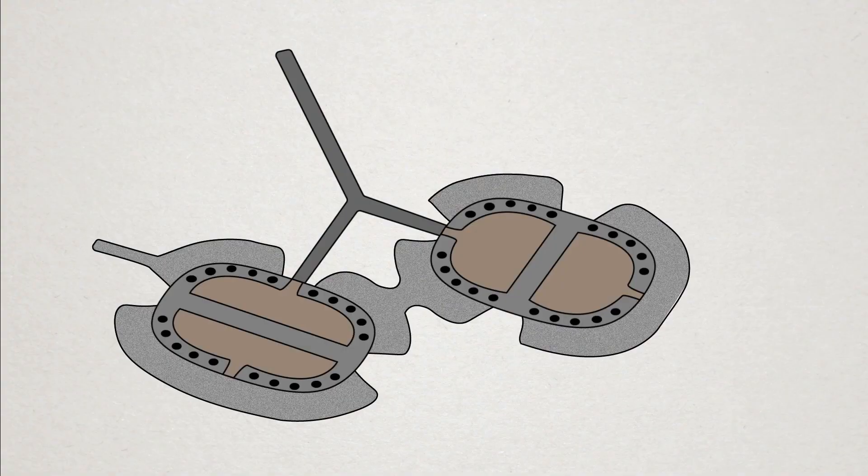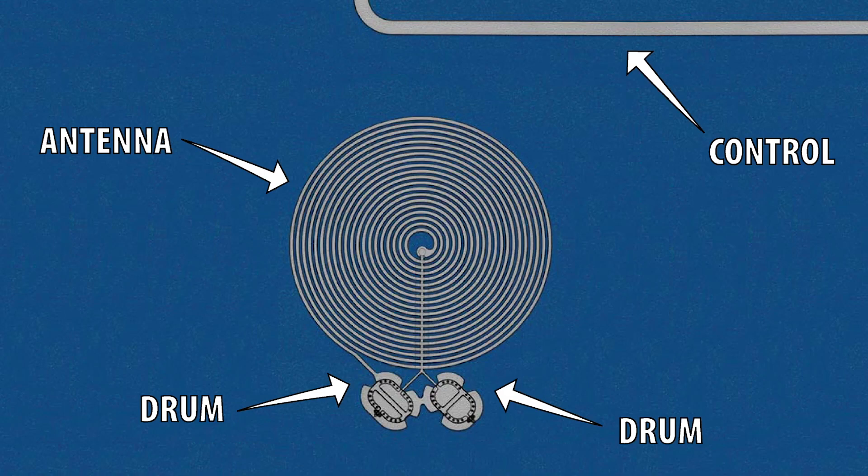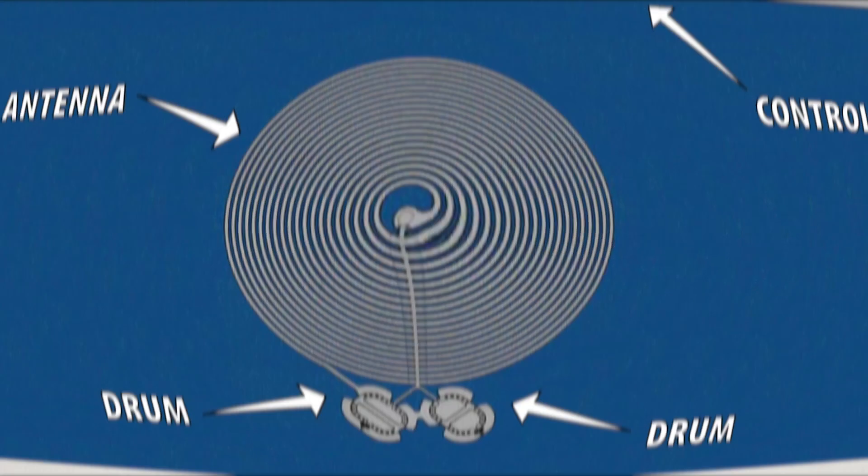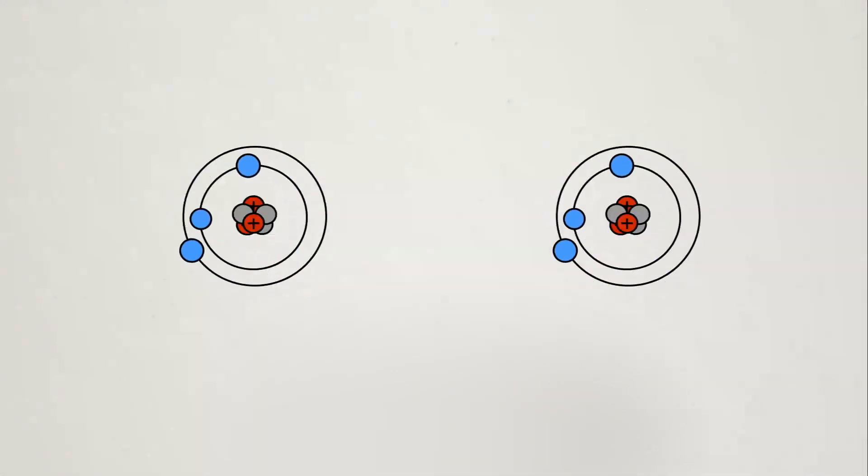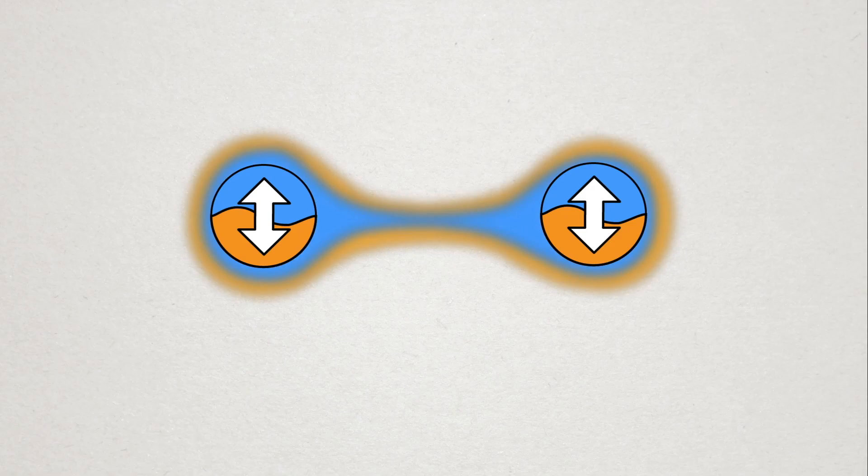they sent a second set of microwave pulses to one of the drums. This pulse added just the right amount of energy to one of the drums that, if shared with its pair, would nudge them into the same quantum state, following the same pattern, and proving they were entangled.